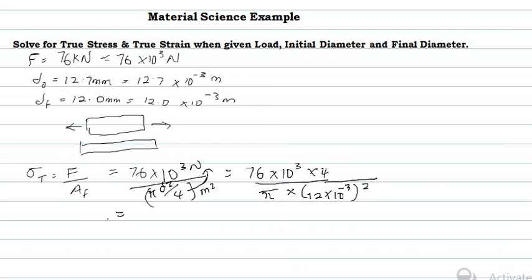Calculating this gives us a true stress of 671.99 × 10⁶ Newtons per meters squared.